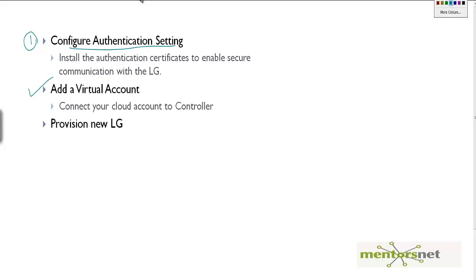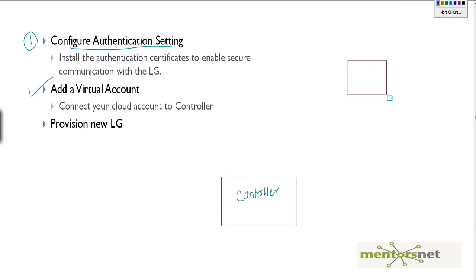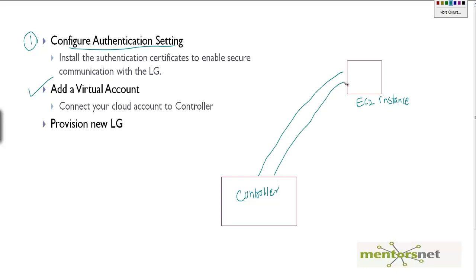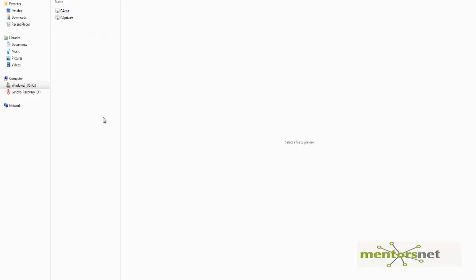This is our controller, and somewhere on the cloud we have an Amazon EC2 instance — a machine with LoadRunner installed and configured. You need to communicate between the controller and EC2 using an SSL protocol, and that is why we need to configure the authentication setting.